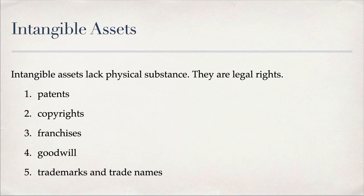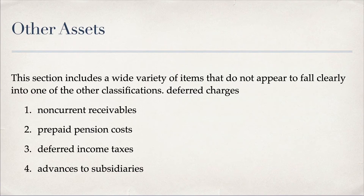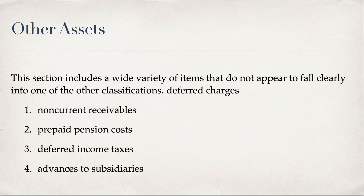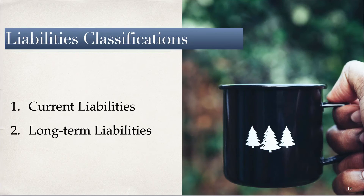Intangible assets are legal rights without a physical characteristic — things like patents, copyrights, franchises, goodwill, trademarks, and trade names. The 'other assets' category covers items that don't clearly fall into the other categories, such as non-current receivables, prepaid pension costs, deferred income taxes, and advances to subsidiaries. In a more complex company, you'll likely see some other assets.